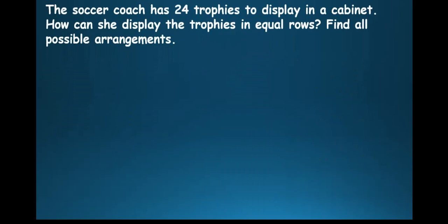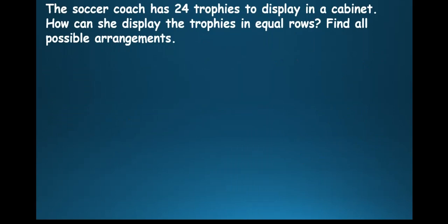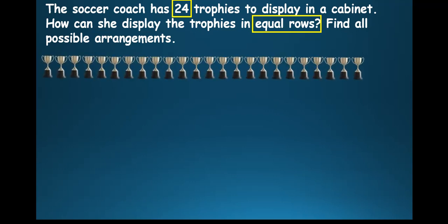Alright, let's take a look at a word problem. A soccer coach has 24 trophies to display in a cabinet. How can she display the trophies in equal rows? Find all possible arrangements. So for this question, it's asking us, how do we display these 24 trophies in equal rows? Of course, it's still asking you to find the factors of that number.